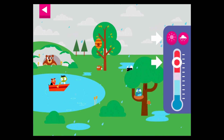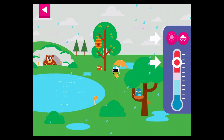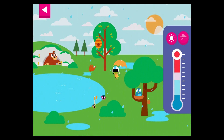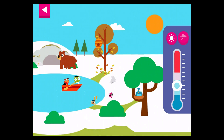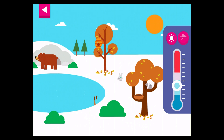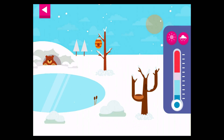Drag the circle up and down the thermometer to change the temperature and control the weather. Tap the sun button to stop the rain or snow. Can you find Dee or Del? What are they doing? You made it snow!